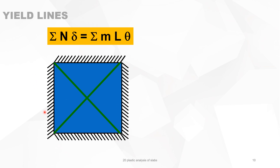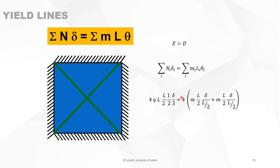Now let's take a square slab and draw the yield lines. The formula to apply is the summation over all sub-regions of N times delta equals the summation of bending moment M projected perpendicular to the rotation axis (length L) times angle of rotation theta. For the square, the sum of N times delta has four identical triangle regions: four times Q times L times L over 2, times the mean displacement delta over 3 for a triangle. That gives the total E.